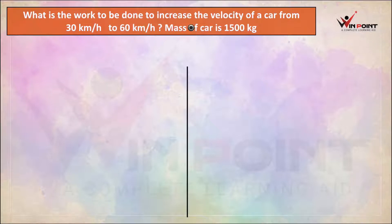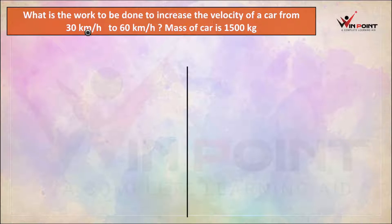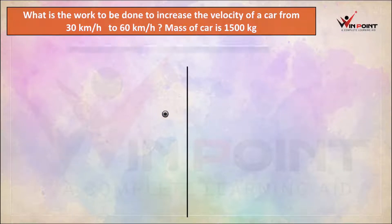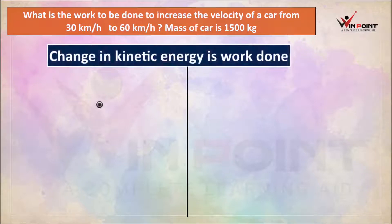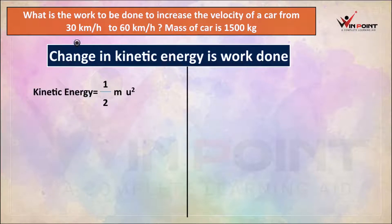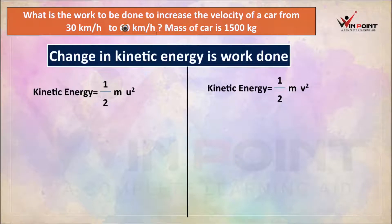What is the work to be done to increase the velocity of a car from 30 km per hour to 60 km per hour? We need to find the work done. To find the work done, we can find change in kinetic energy, because change in kinetic energy is equal to work done. There are two velocities, so there will be two kinetic energies: half mv squared for initial velocity and half mv squared for final velocity.